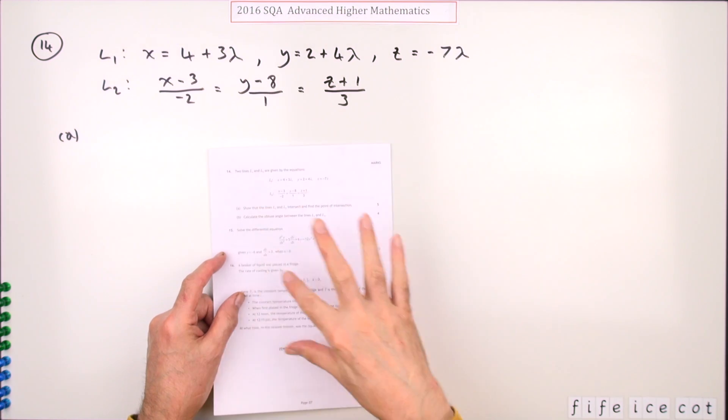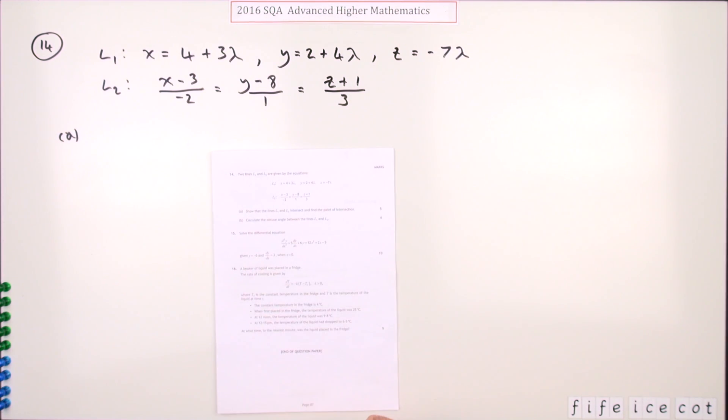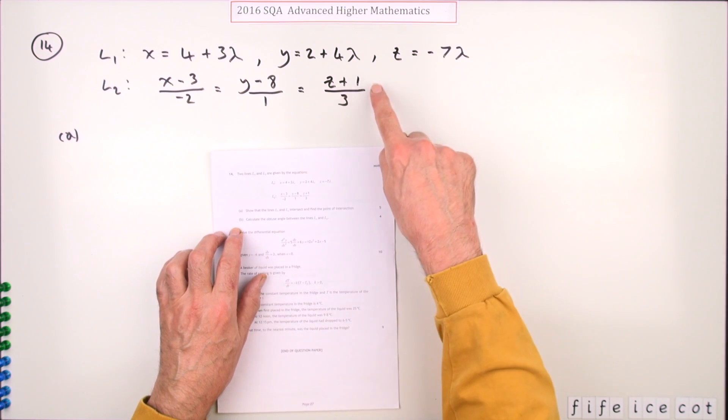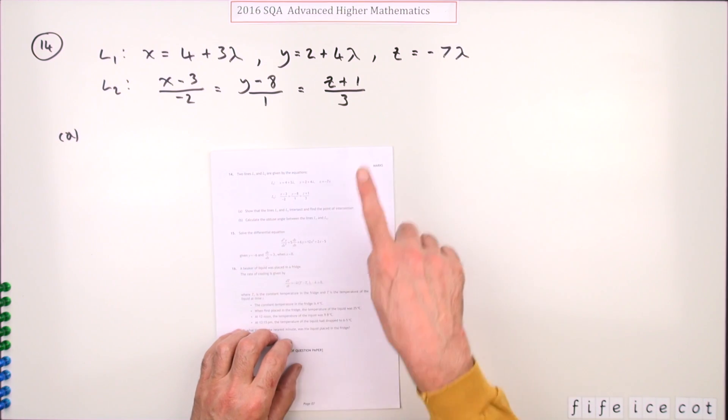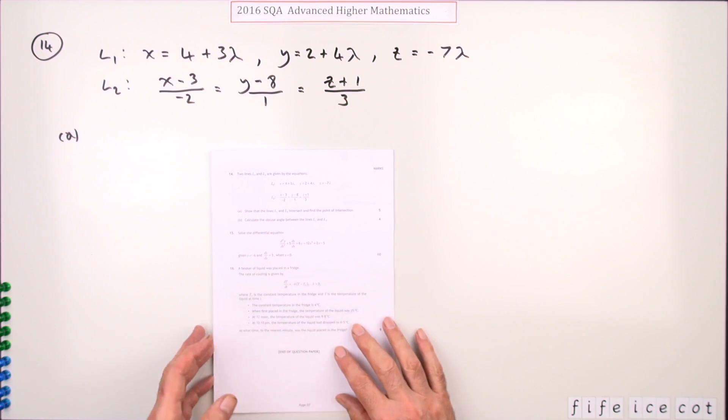Number 14 from the 2016 Advanced Higher Maths, 9 marks for the geometry, the vectors, the lines and planes question - just lines in this case. You're given two lines here, one in parametric form and one in symmetric form, and you have to show that they intersect and find the point of intersection for five marks.